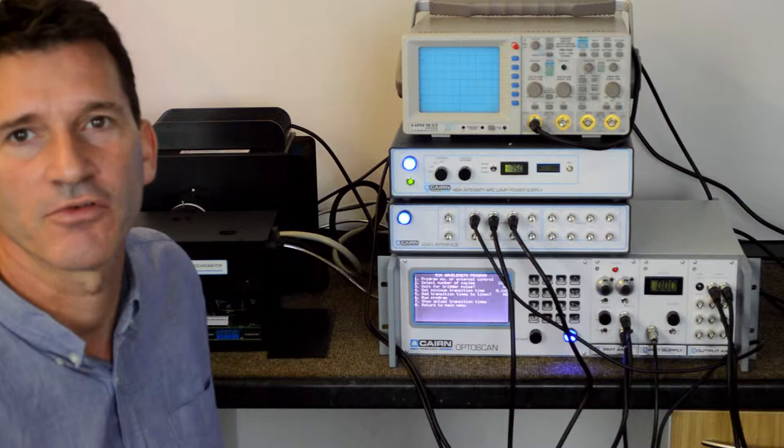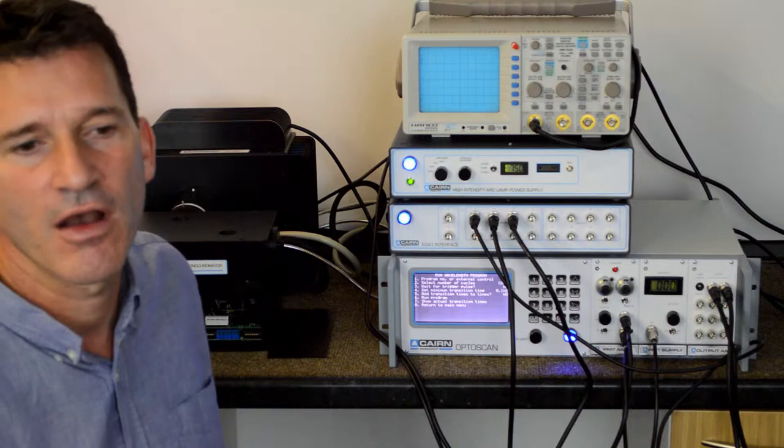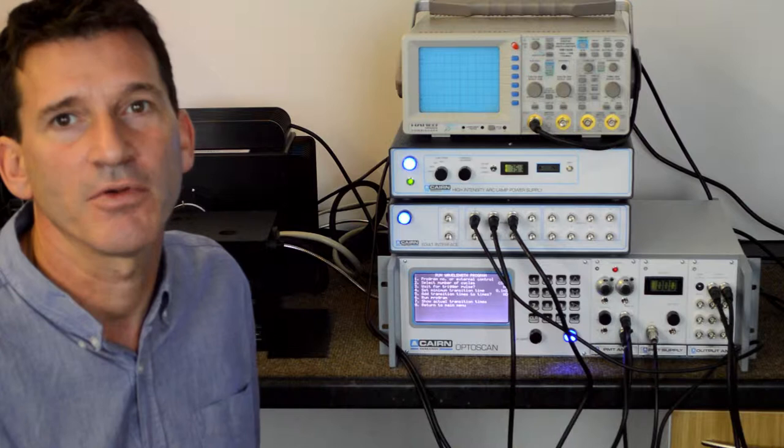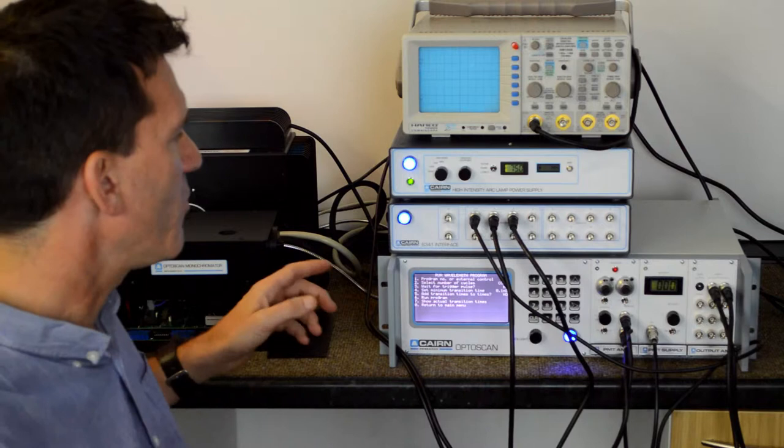I'm going to explain today how to set up a FURA2 experiment using the Cairn OptoScan monochromator in integration mode. We've already set up a program to run between 340 and 380 nanometers with appropriate time resolution and bandpass to get signals at the level that I want to record.